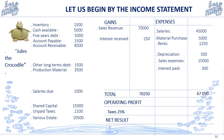Taxes are 25%. Total revenue is 70,250. Total expenses are 67,050, giving an operating profit of 3,200. From this you deduct 25% taxes — the average rate in the European Union — which equals 800 in taxes. Therefore your net result is 3,200 minus 800 equals 2,400. The income statement is done; you can now shift to the balance sheet.